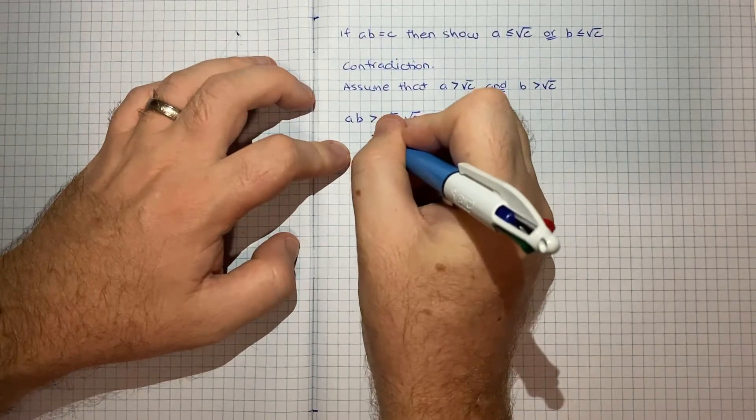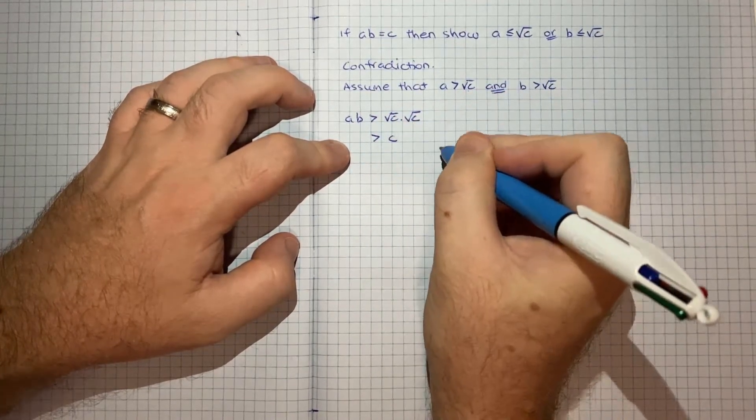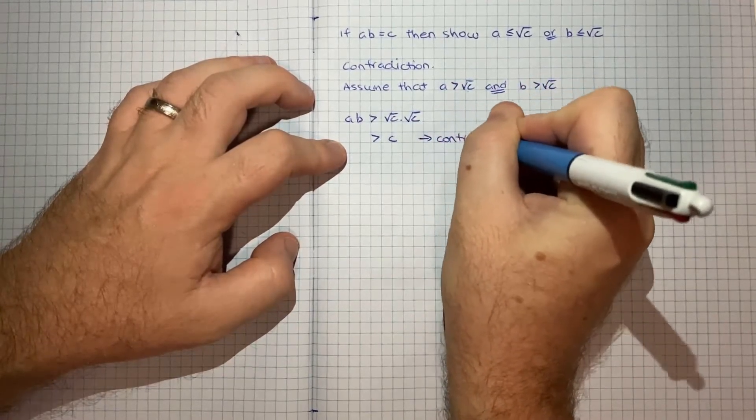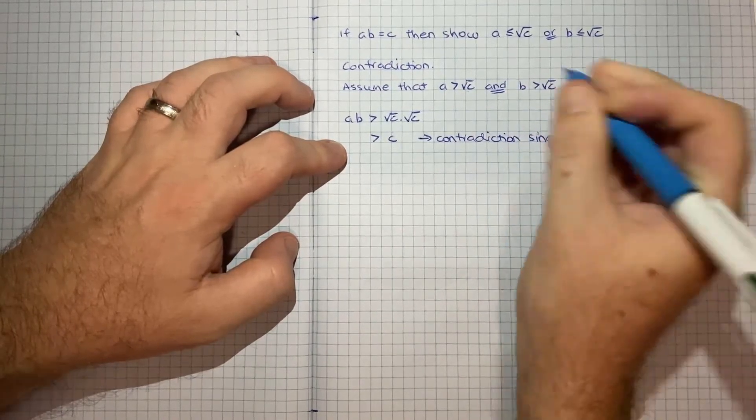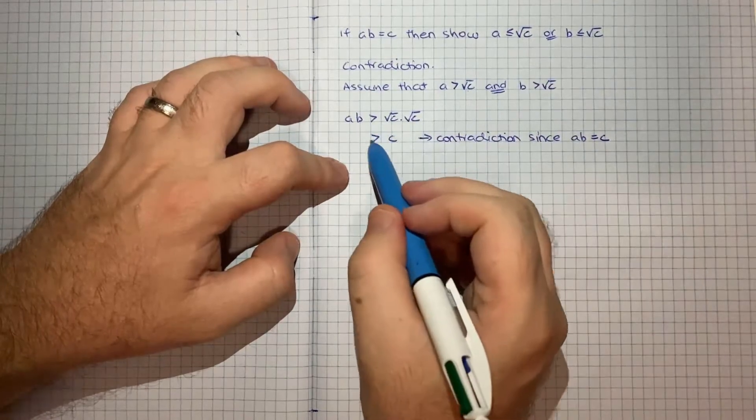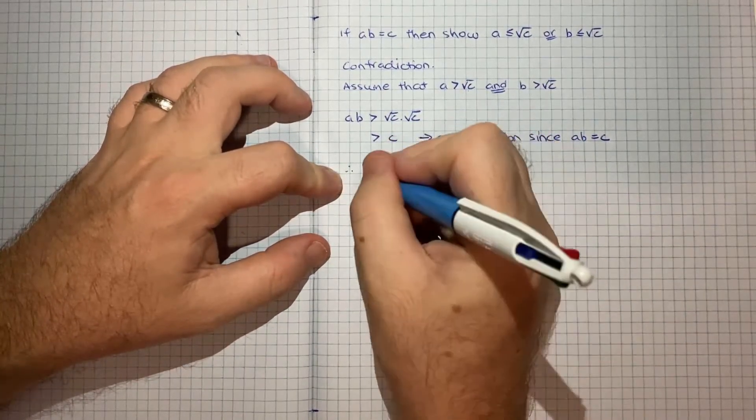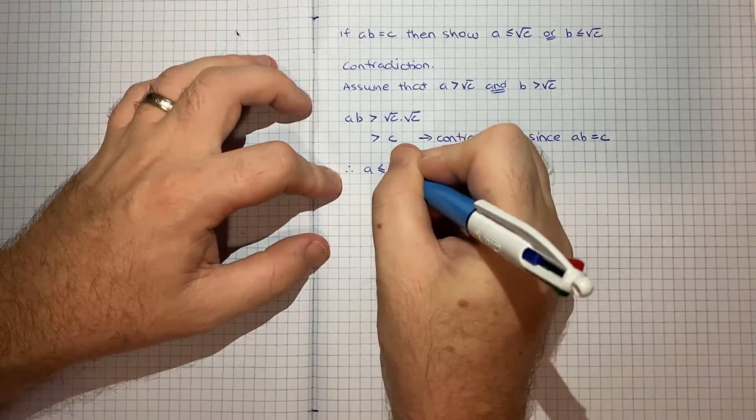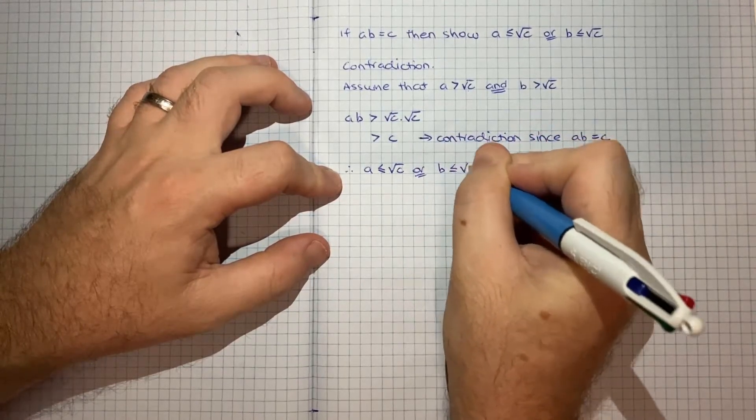So that means ab would be greater than root c times root c is c. And that is a contradiction since we're told that a times b is equal to c, which means a times b can't be greater than c. So therefore, it must be true that either a is less than or equal to root c or b is less than or equal to root c.